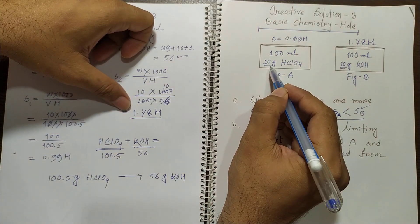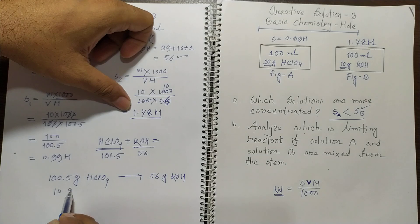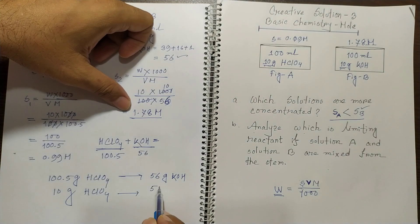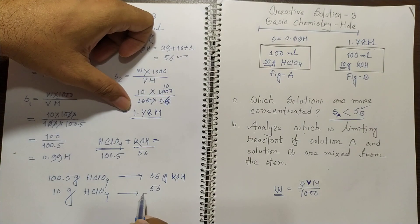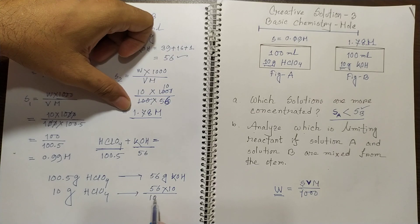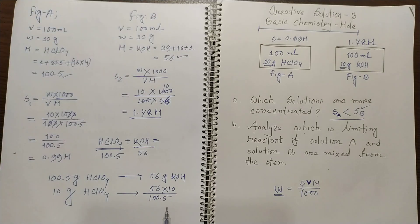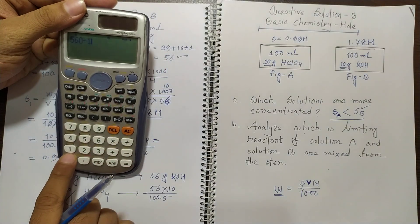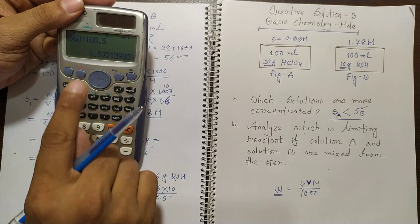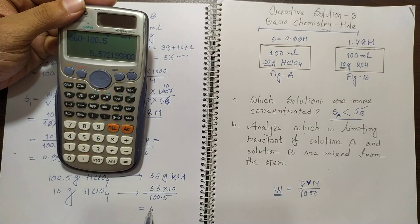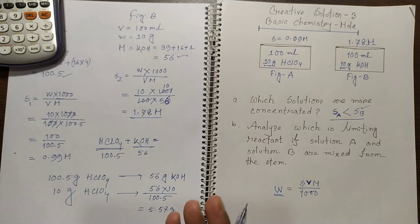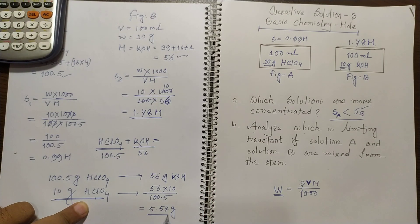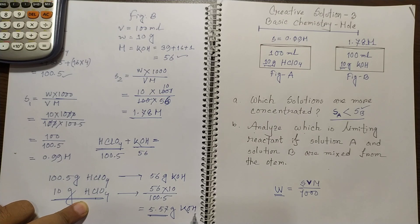So 10 gram HClO4 is present in this jar. So we can find that this is 56 times 10 over 100.5. So you got 560 divided by 100.5 and that is 5.57 gram. So we can find that 10 gram perchloric acid will react with 5.57 gram potassium hydroxide.